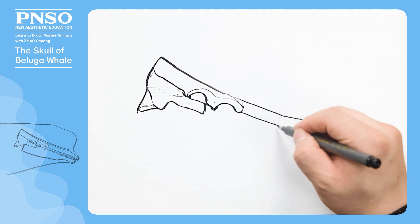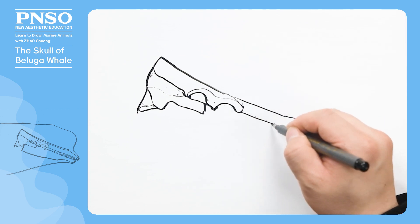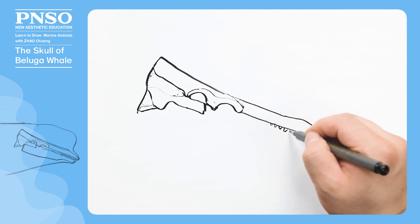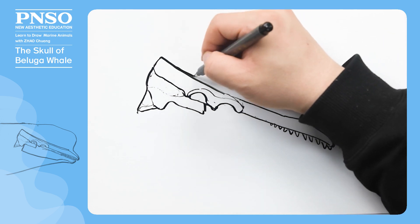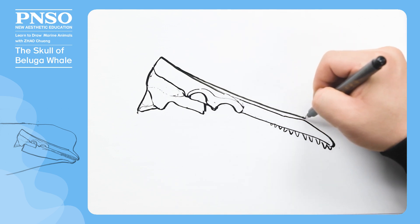The maxillary teeth are all concentrated in the front half. Note that the teeth in the front of the upper jaw are slanted forward. Above the maxilla is its nasal bone.